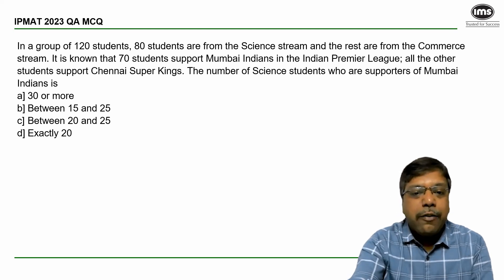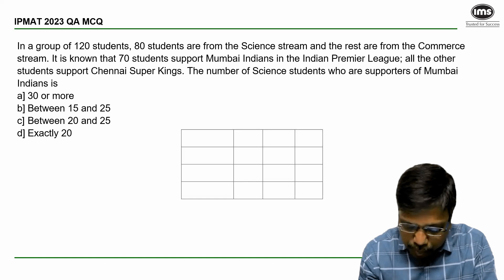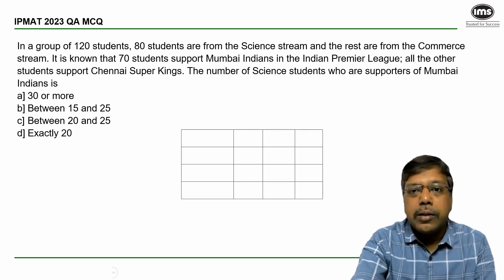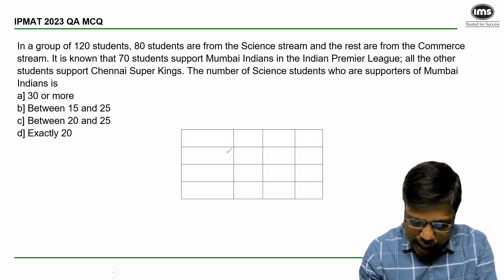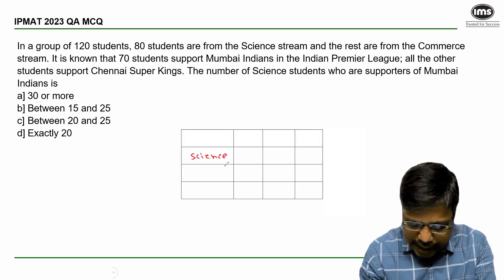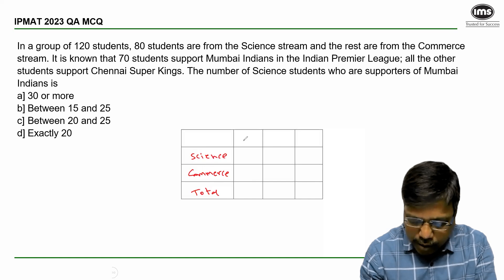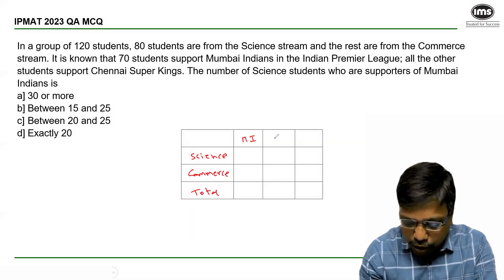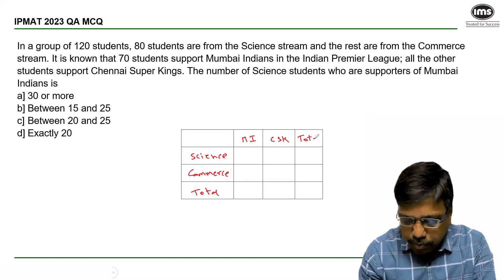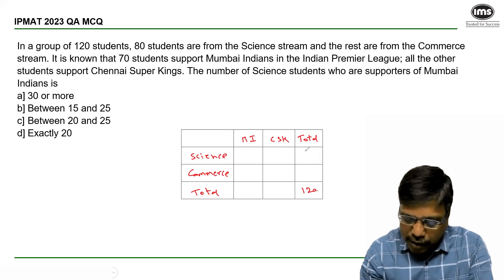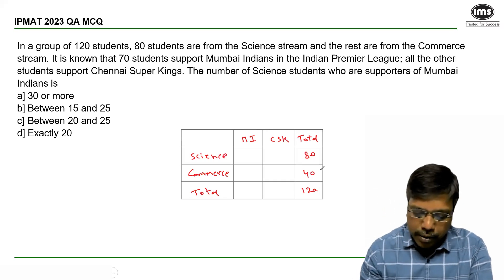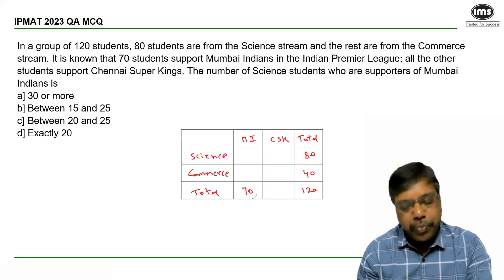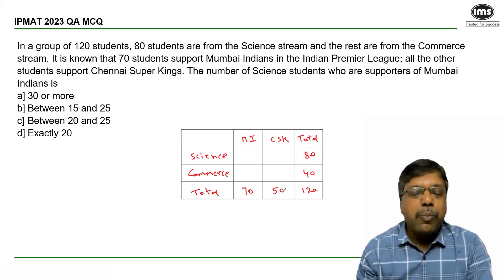This tabular form represents the data we have. The rows represent science stream, commerce stream, and total; the columns represent Mumbai Indians, Chennai Super Kings, and total. The total number of students is 120. If 80 students are from science stream, the remaining 40 will be from commerce. If 70 students support Mumbai Indians, the remaining 50 will be supporting Chennai Super Kings.